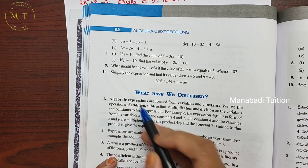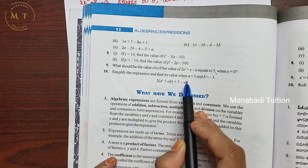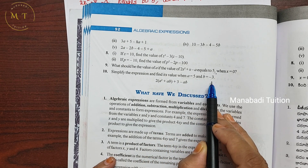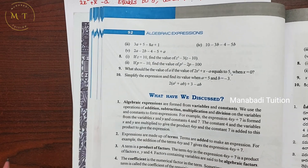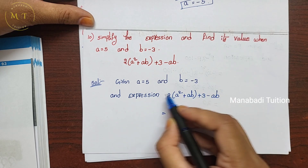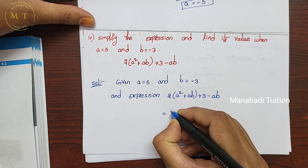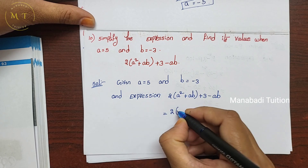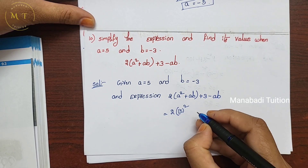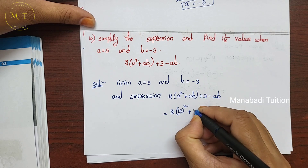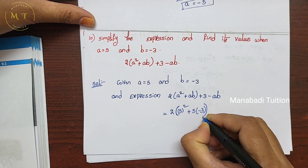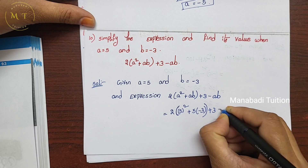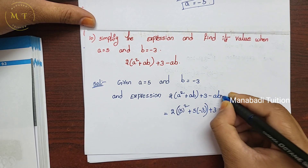Question number 10: simplify the expression and find its value when a equals 5 and b equals minus 3. So a value is 5 and b value is minus 3. We have to find the total expression value. Given expression — substitute a value 5 and b value minus 3. We have 2a squared, plus a times b, plus 3, minus a times b.